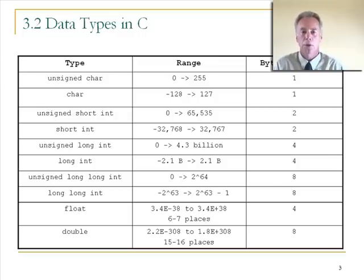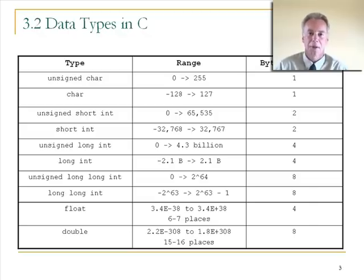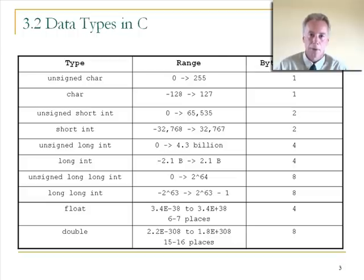This table shows the data types available in C using this compiler. You'll notice they're not all single-word types. The commonly-used int for whole numbers isn't even on this list — I'll explain why. All the types except the last two store integer numbers. The last two — float and double — are the data types you would use when you have a decimal point in your numeric values.